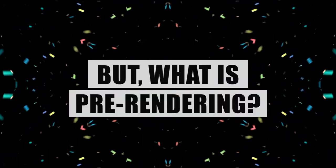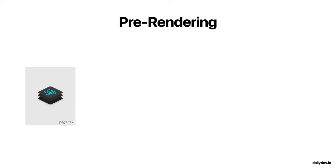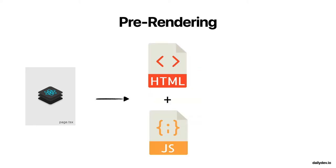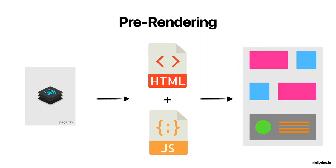Right at the introduction of the video, we mentioned pre-rendering and how Next.js is pre-rendering every page by default. But what is pre-rendering? Pre-rendering is the act of taking a page in the application and generating the plain HTML for it beforehand, instead of letting the client side handle the bulk of the work.